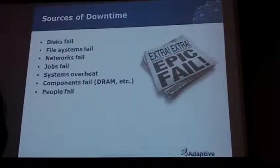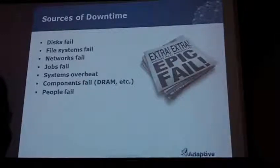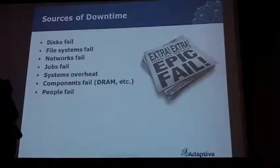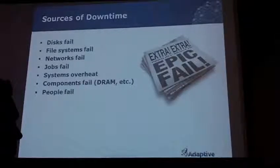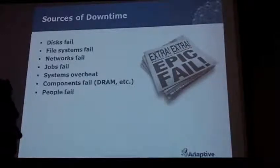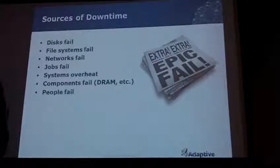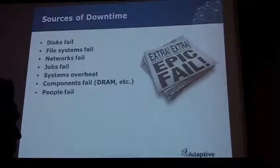Sources of downtime: disks fail. Google, who probably owns more disks than any organization should, studied their drives and identified the bathtub curve — disks die very early in their lifetime from manufacturing issues, then the mortality rate drops, and spikes again around four to five years, their average drive lifespan. So disks are actually somewhat predictable. A tip: before putting a node into a critical system, run it for a while writing and reading to disk — it's very likely to fail in the first few hours if it's going to fail at all.